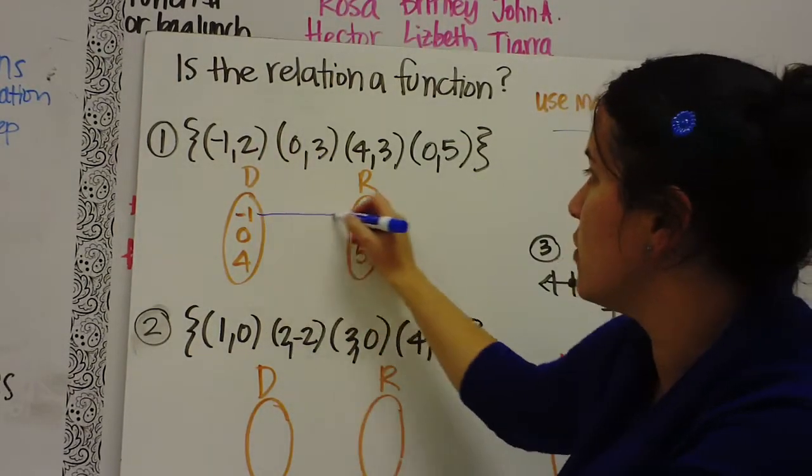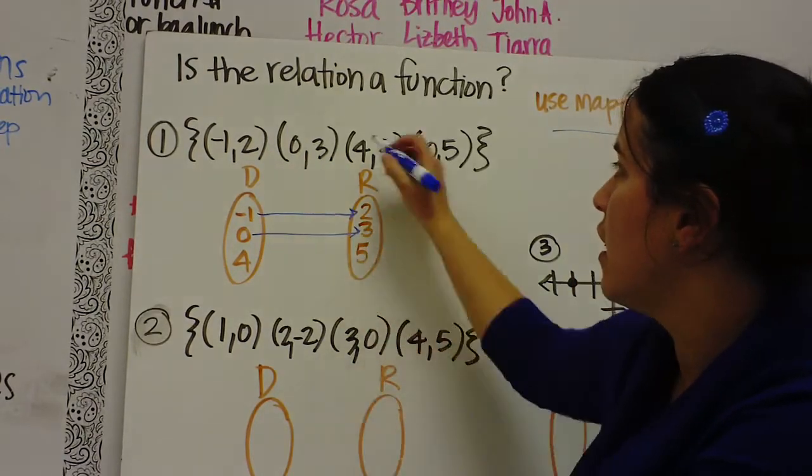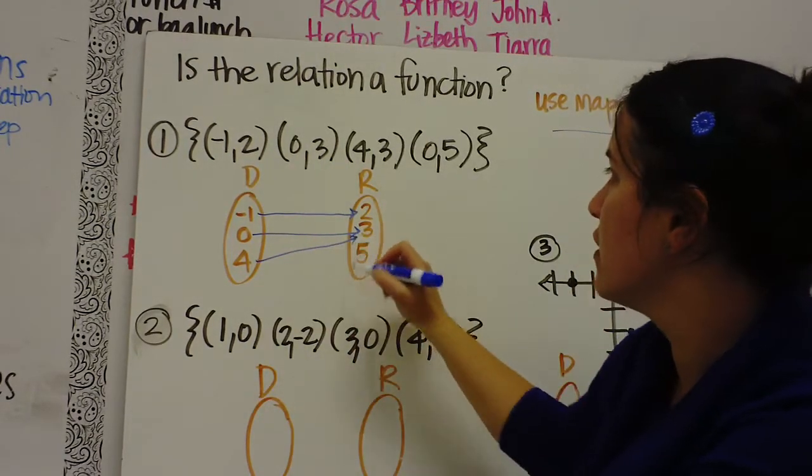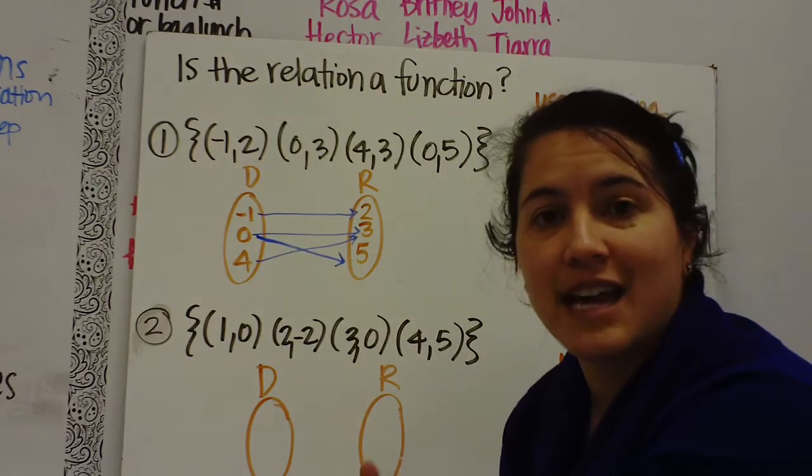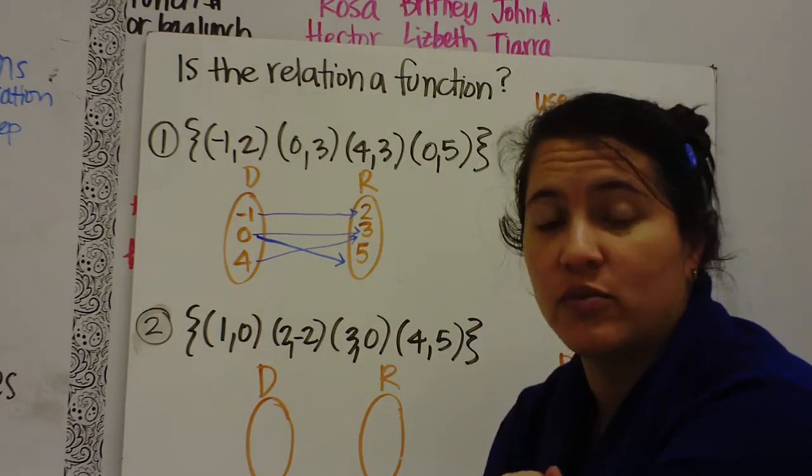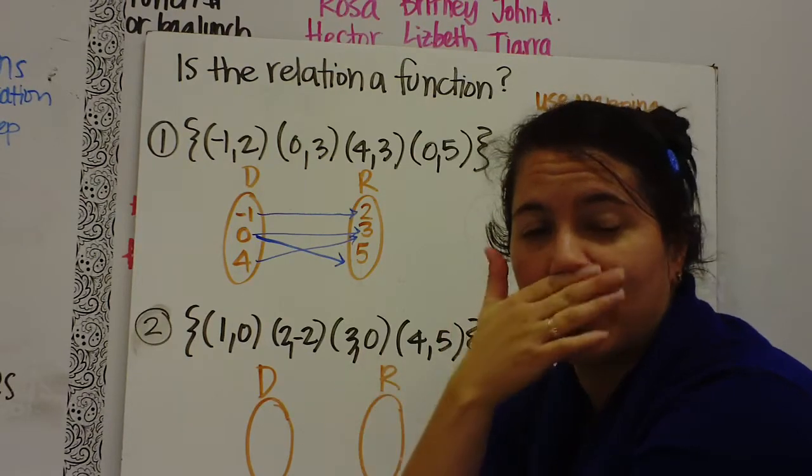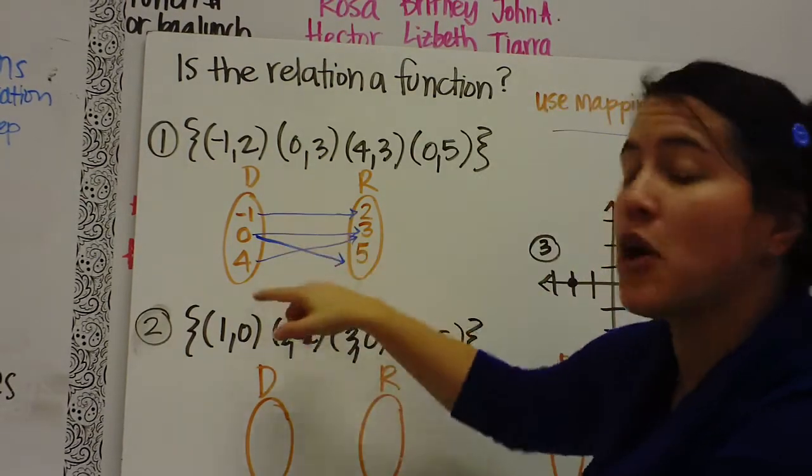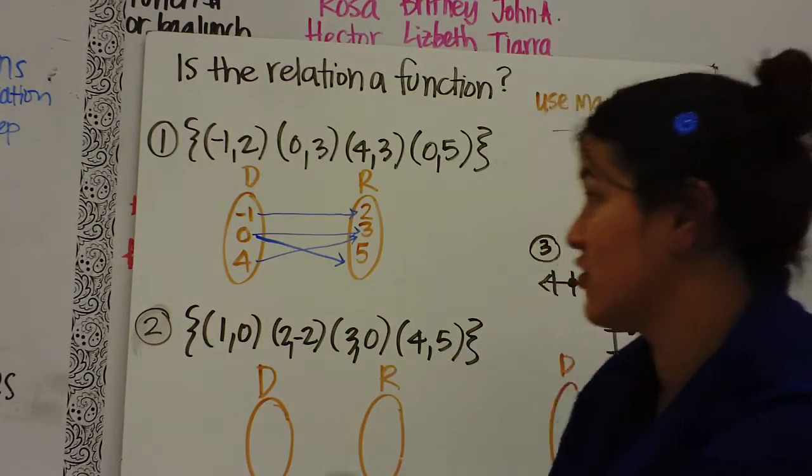So negative 1 goes to 2, 0 goes to 3, 4 goes to 3, and 0 goes to 5. That's called mapping. Now the test is do you see any domain value that has two different range values? If you have any domain value that has two different arrows coming from it, that is bad. That means it's not a function.